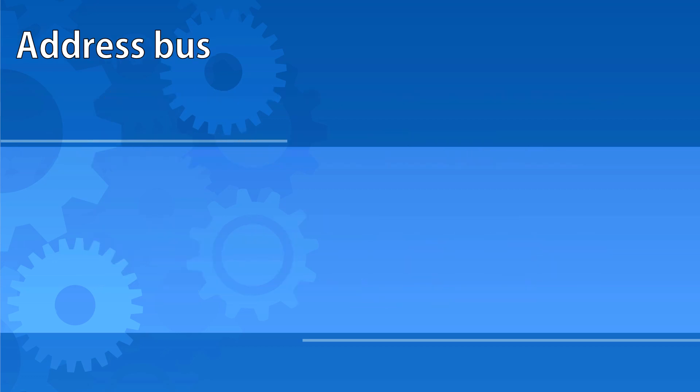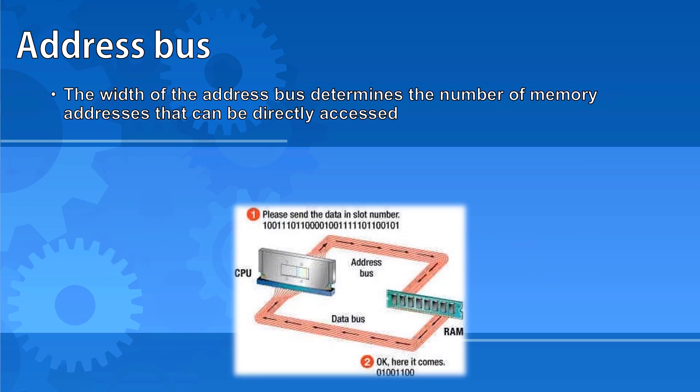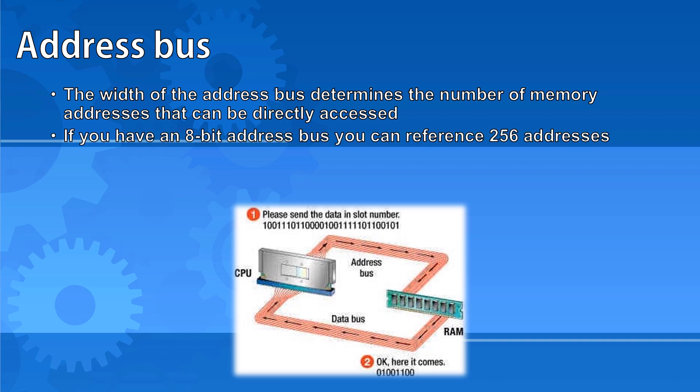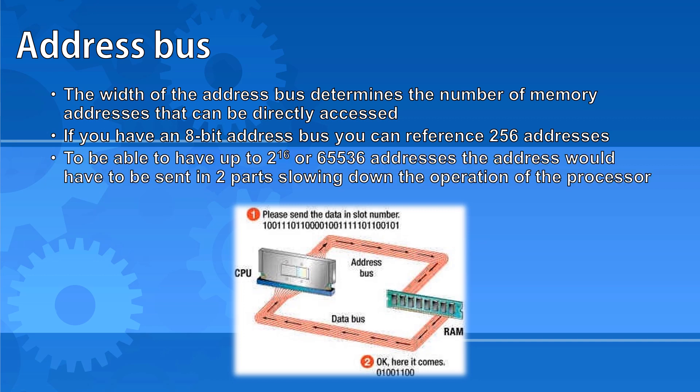The width of the address bus determines the number of memory addresses that can be directly accessed. With an 8-bit address bus, you can reference 256 addresses. To be able to have up to 65,536 addresses — which is 2 to the 16 — the address would have to be sent in two parts, and this would slow down the operation of the processor.